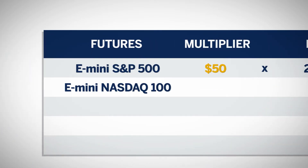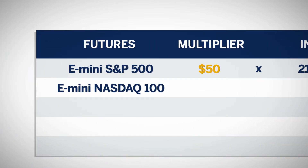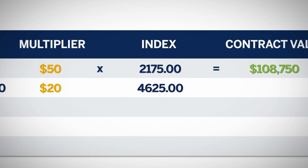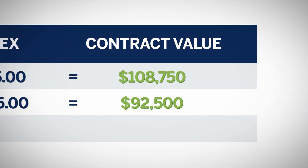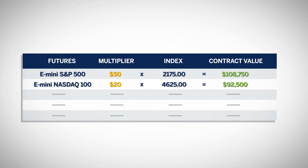The E-mini NASDAQ 100 Futures contract has a $20 multiplier. If the E-mini NASDAQ 100 Futures contract is trading at $4,625, then the notional value would be $92,500 per contract, or $20 times $4,625.